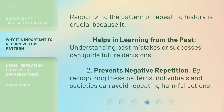Recognizing the pattern of repeating history is crucial because, first, it helps in learning from the past — understanding past mistakes or successes can guide future decisions. Second, it prevents negative repetition: by recognizing these patterns, individuals and societies can avoid repeating harmful actions.